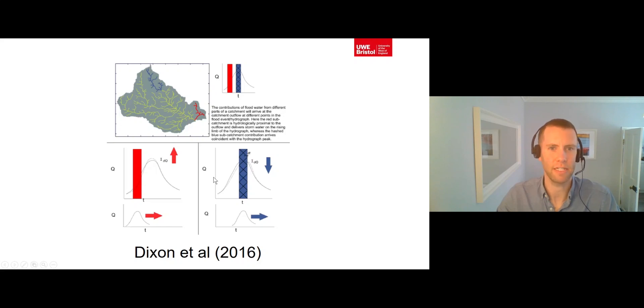Instead, we therefore need to focus on slowing down the water from areas of the catchment that currently already contribute to the main flood peak, like this area in blue. This will then result in the flood peak being reduced, as that water that was previously arriving during the main flood peak would now be arriving later in the falling limb, as shown in this graph on the right.